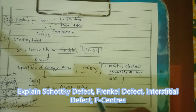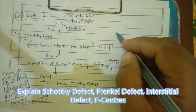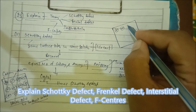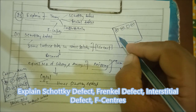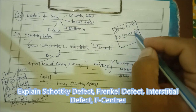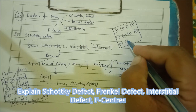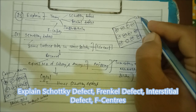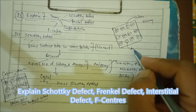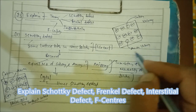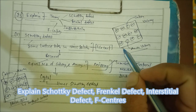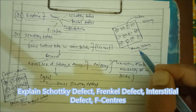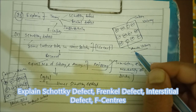Now if you want to show the ionic solid with defect — that is, Schottky defect — a square structure is drawn with some empty spaces. Here a vacant space is the cation vacancy, and another vacant space is the anion vacancy. The lattice sites are vacant because equal numbers of cations and anions are missing.